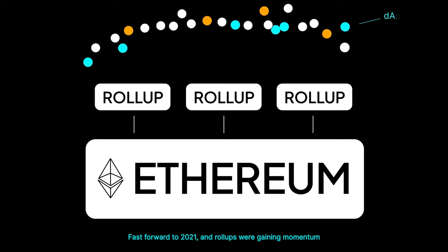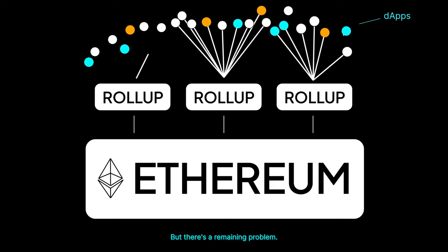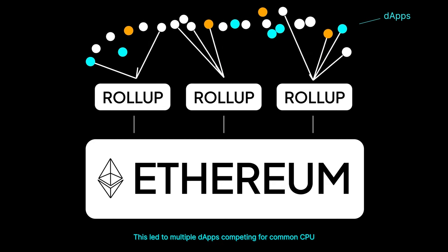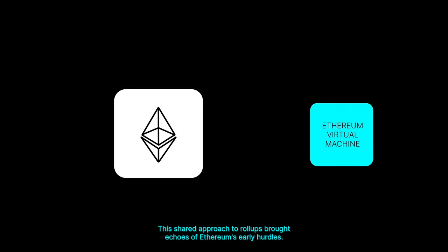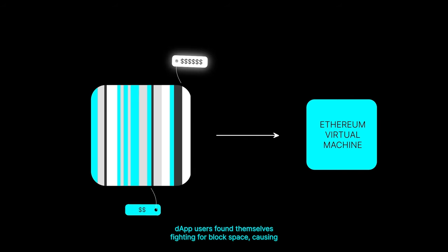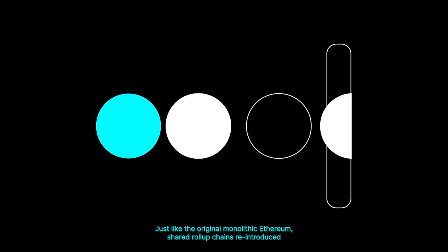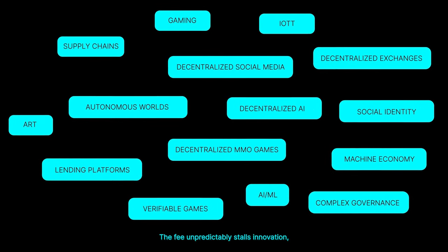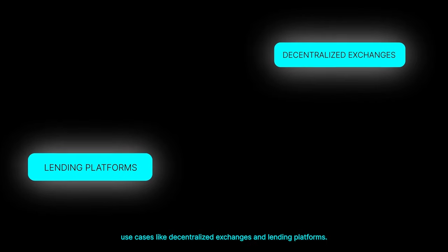Fast forward to 2021, and roll-ups were gaining momentum with projects like Arbitrum and Optimism paving the way. But there's a remaining problem: these roll-ups are still shared among all dApps that participate in their networks, leading to multiple dApps competing for common CPU resources again. DApp users found themselves fighting for block space, causing transaction fees to once again fluctuate unpredictably. Shared roll-up chains reintroduced scarcity, rendering them inaccessible to all but a few users and applications, narrowing the focus predominantly to DeFi use cases like decentralized exchanges and lending platforms.